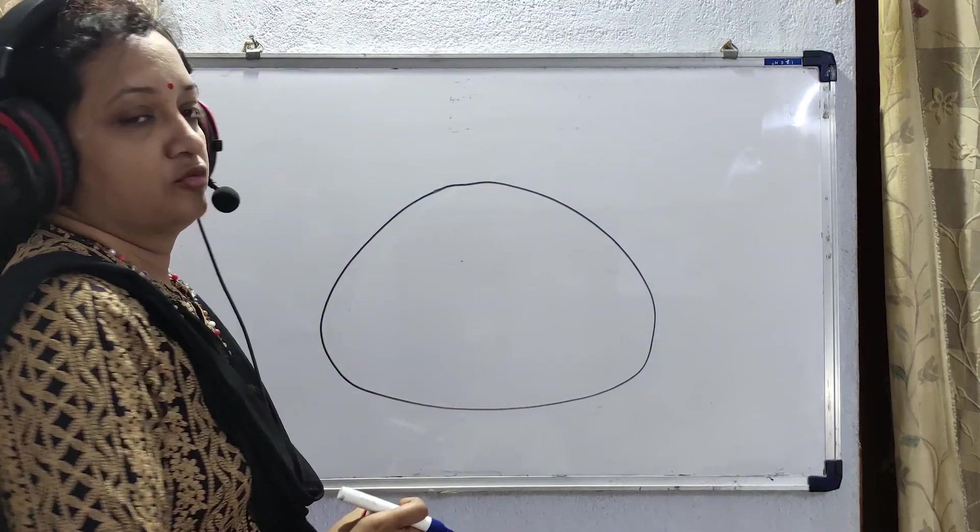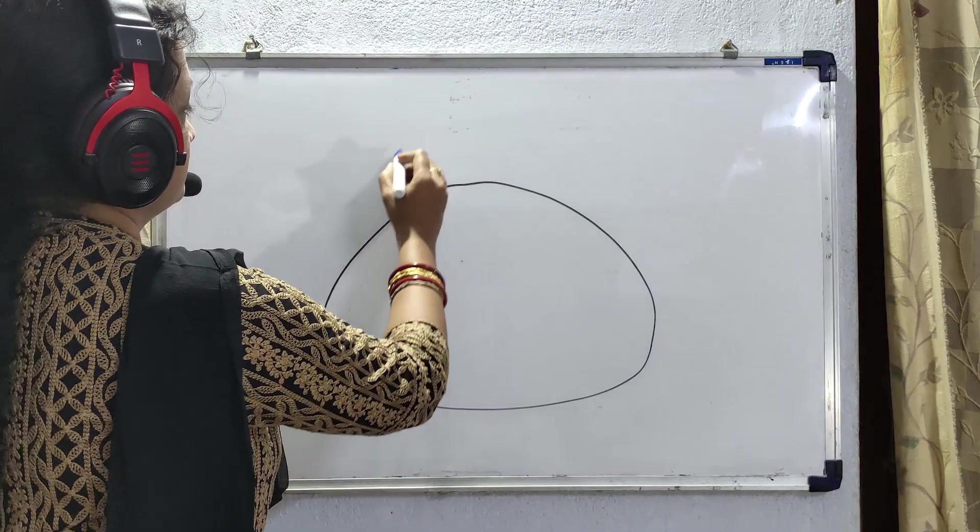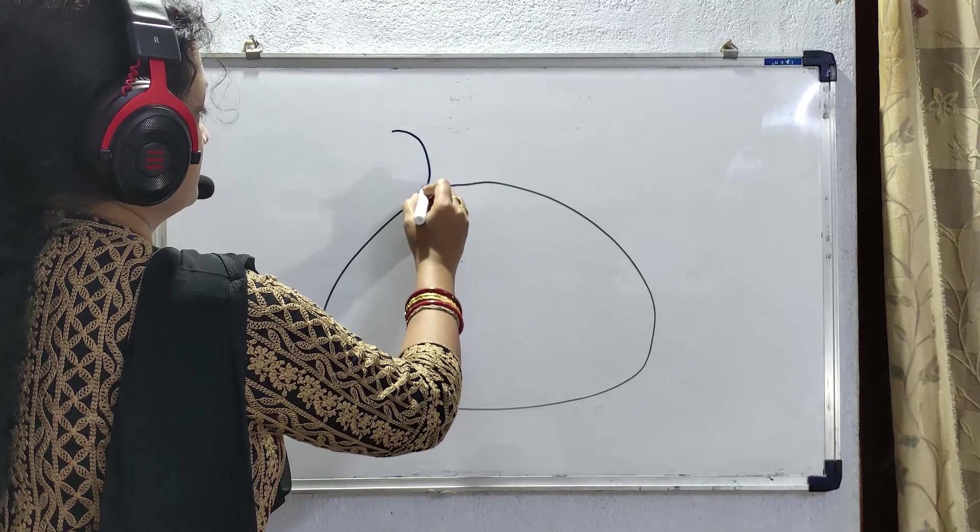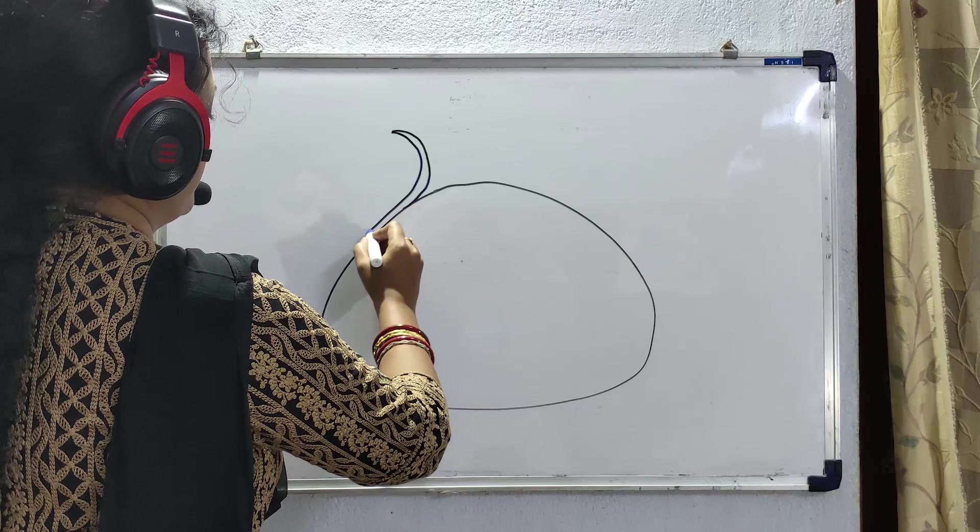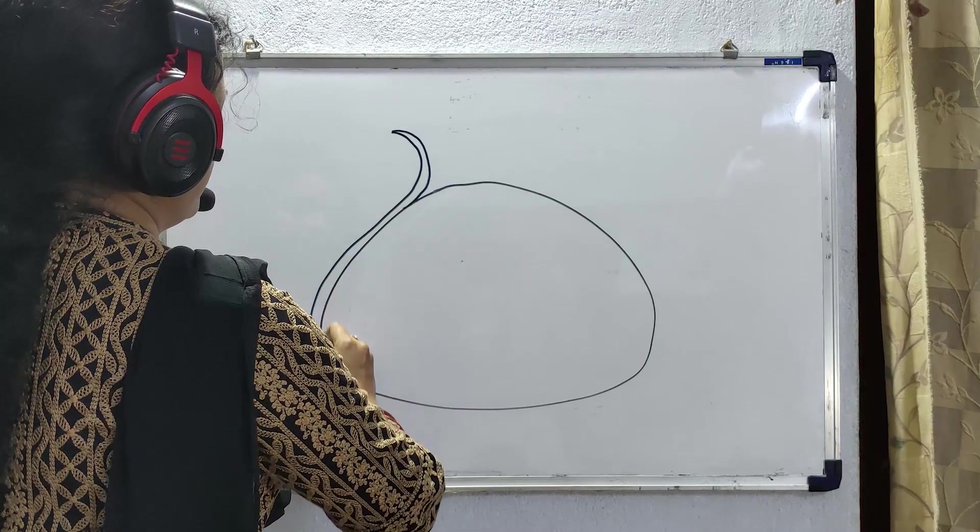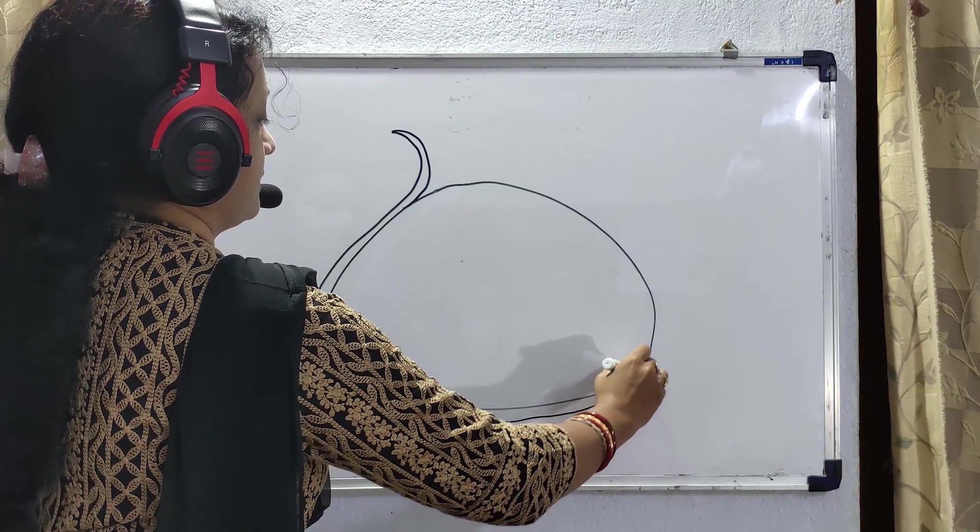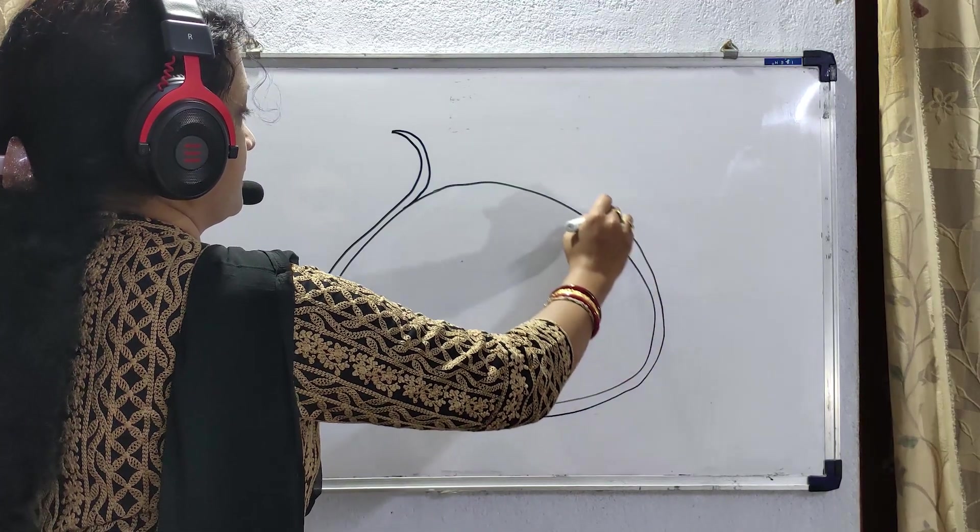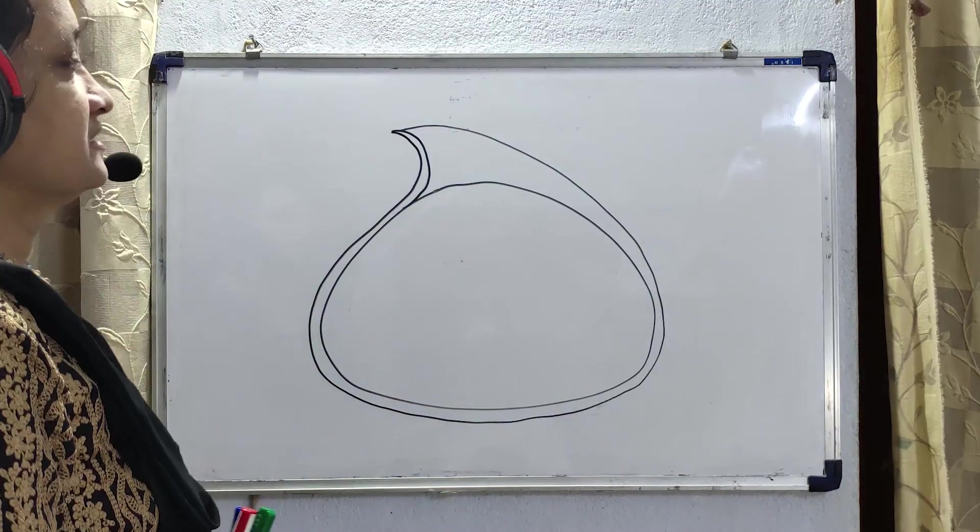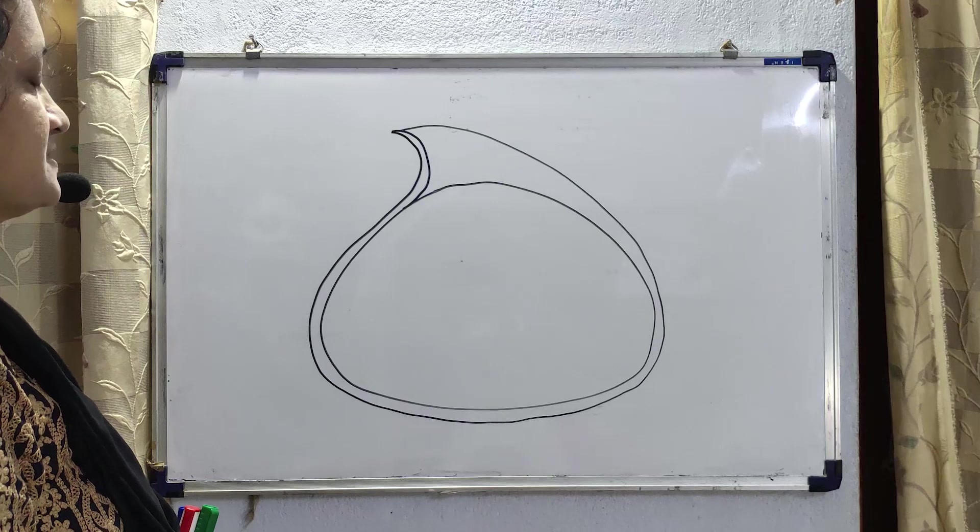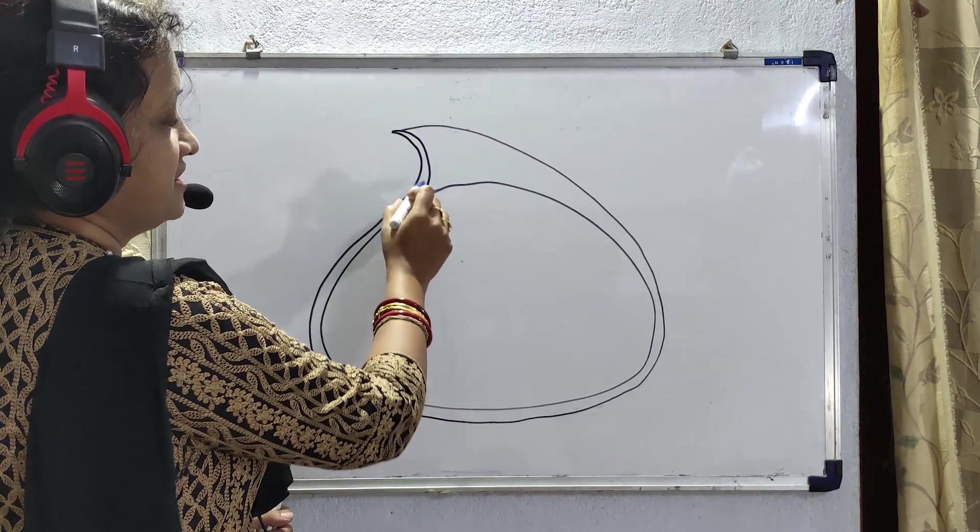Draw an oval shaped structure. We have to show two membranes. So, this is the outline of the chloroplast. This is the outer membrane and this is the inner membrane.